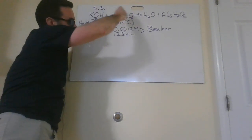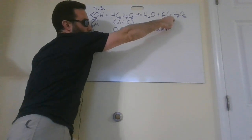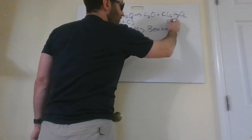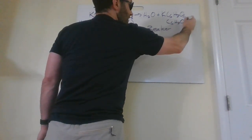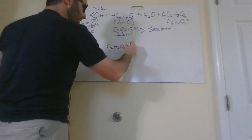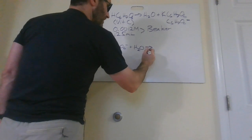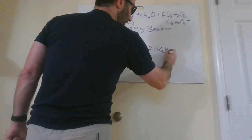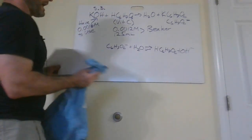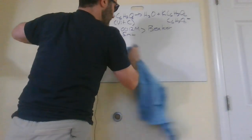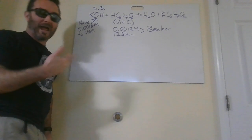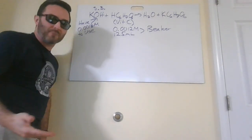Strong base plus weak acid gives you water and a weak base. When you neutralize this, potassium is going to come off, and in solution it's really just the ascorbate ion. C6H7O6⁻ plus water is going to reform the original acid and make hydroxide. When I neutralize this solution, neutral doesn't mean neutral — my pH is actually going to be a little bit above seven. It's going to be a basic solution when moles equal moles.